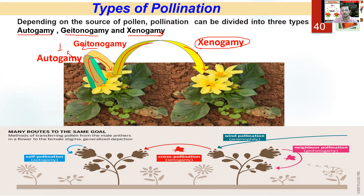In xenogamy, there is a transfer of pollen grain from the anther of one plant of a given species to the stigma of a different flower of another plant of the same species. So two plants are involved and variability is higher. Obviously, for xenogamy, pollinators are needed. So, from the point of view of evolution or genetic advantage, more variability is exhibited by cross-pollination, and for that you need agents of pollination.